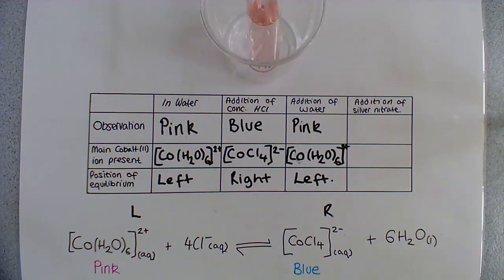So the last thing we're going to do is add some silver nitrate. Those of you that do triple or are studying A-level should know that silver nitrate can be used to test for halide ions.